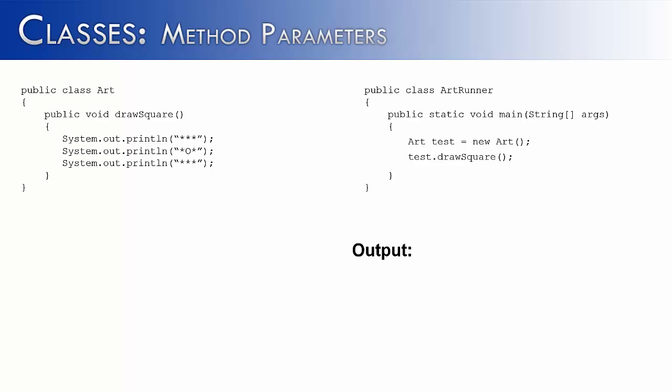Now that we have a good understanding about how to create a method and how to use that method inside of a class, I want to look at an important aspect of methods, and that is their parameters. You'll notice in this example that the drawSquare method does not have any parameters or anything being passed to it — it would just go on about its business without having a parameter.